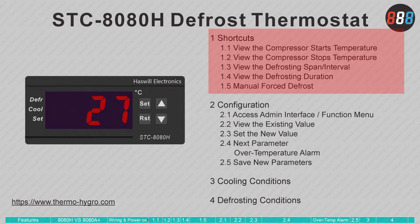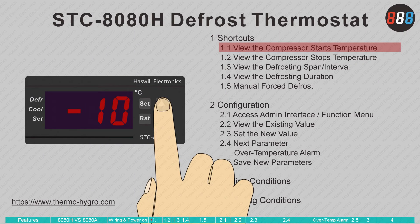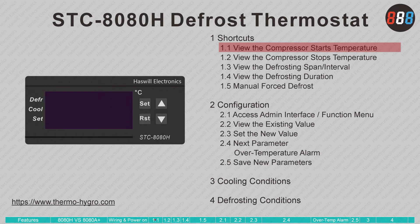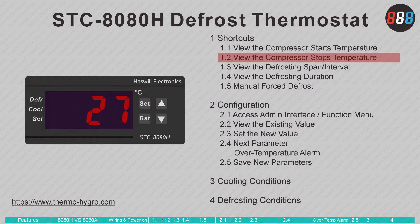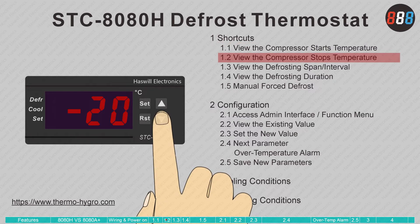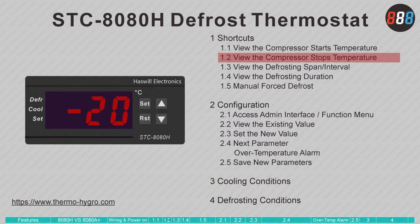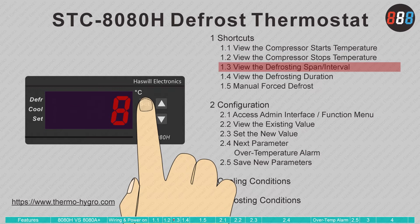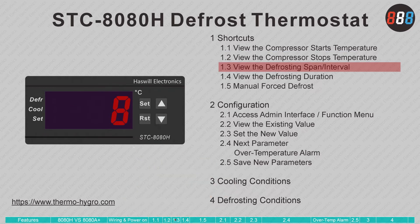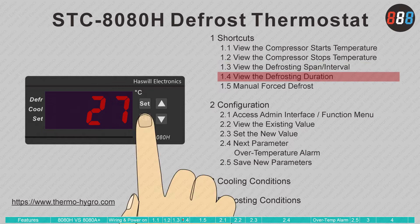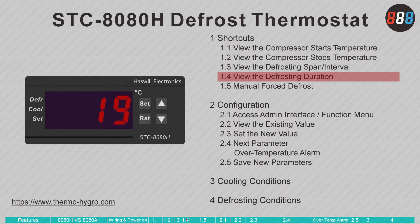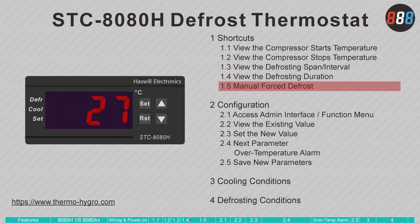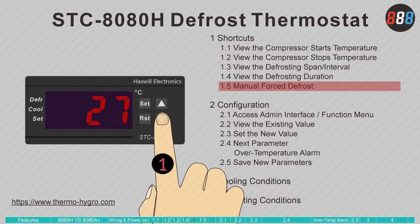Here are five shortcut keys: press the Up button to view the compressor start temperature — it will return to normal state after three seconds. Press the Down button to view the compressor stop temperature. Press the Set button to view the hours between two defrosting actions. Press the RST button to view the defrost lasting minutes. Press and hold the Down button for three seconds to manually change the defrosting state.